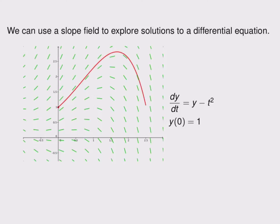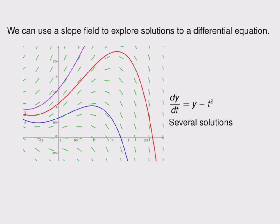This is one solution, the one that goes through the point (0,1), but we can also do this with many other solutions going through other nearby points. Here's several of them.